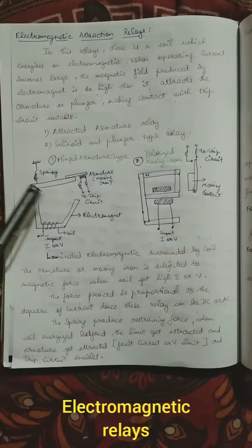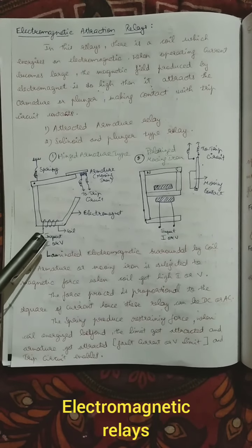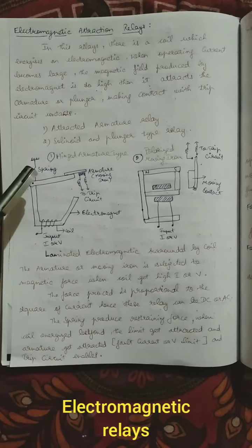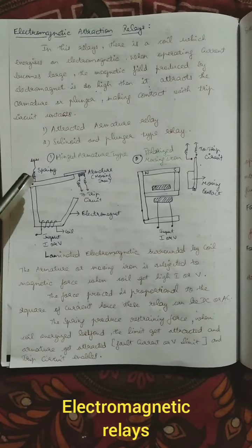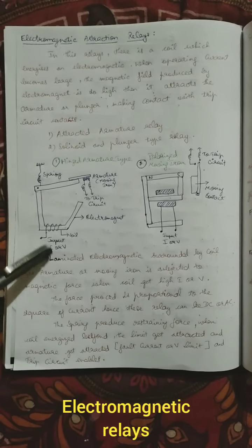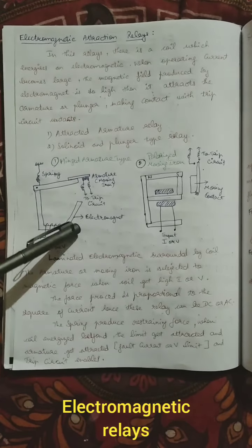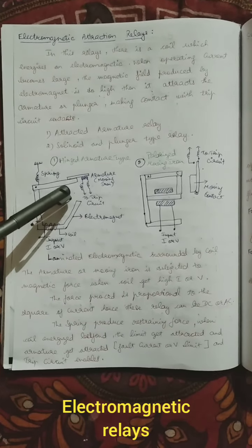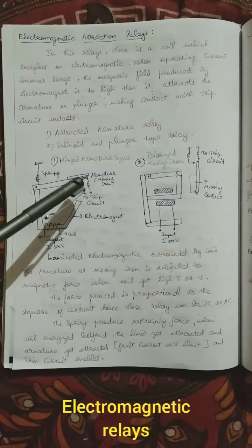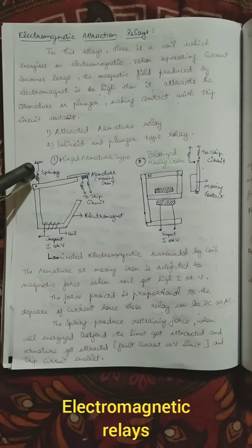For the hinged armature type, this is your magnet surrounded by a coil. The coil input is AC or DC current or voltage. A spring is connected to the top of the magnet which produces a restraining force. When the fault current occurs, the coil gets energized and produces an electromagnetic force. This electromagnetic force must be higher than the restraining force for the armature iron particles to get attracted and move.